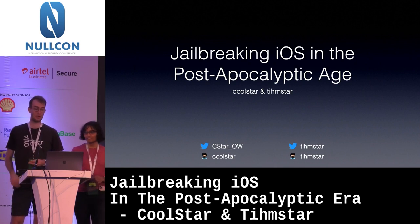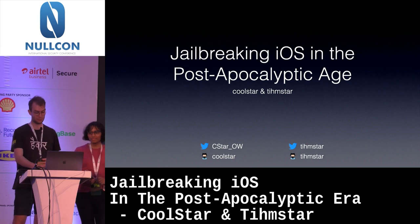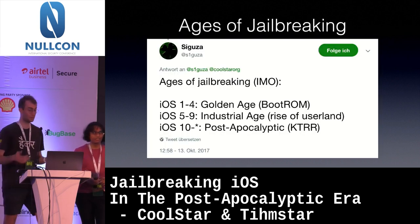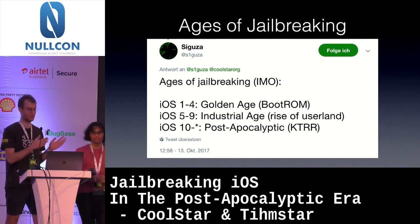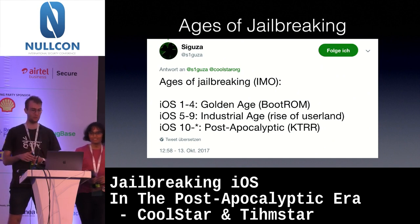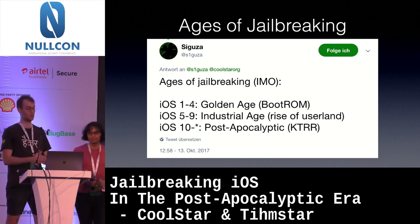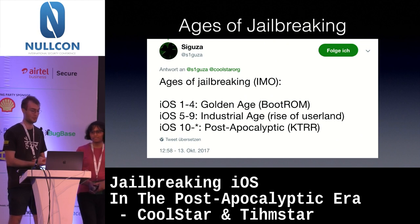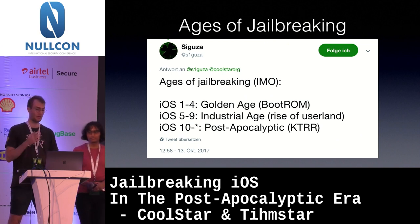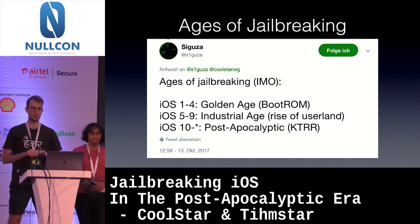We're going to present today the talk "Jailbreaking iOS in the Post-Apocalyptic Age." The ages of jailbreaking are defined as follows: iOS 1 to 4 is the golden age where we had lots of bootrom bugs. iOS 5 to 9 was the industrial age where the rise of the userland came. And then starting from iOS 10, we have the Post-Apocalyptic Age with lots of mitigations making our lives miserable.